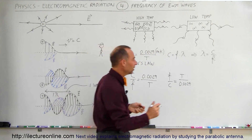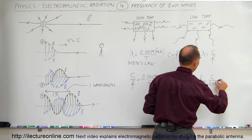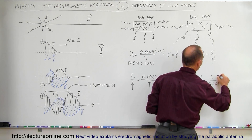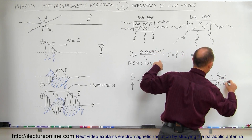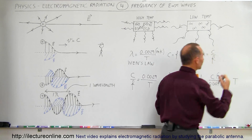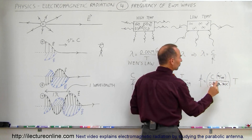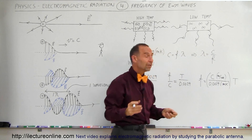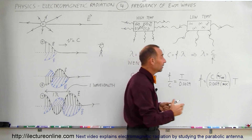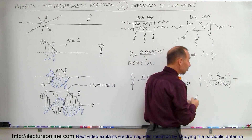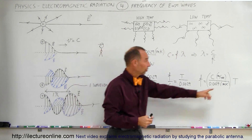Finally, solving for frequency, we get that the frequency is equal to the speed of light — in meters per second — divided by 0.0029 meter·Kelvin, times the temperature in Kelvin. The Kelvin units cancel, so the frequency is equal to some constant times the temperature. This means if the temperature of the object doubles, the frequency of the radiation coming from the object will double as well. If the temperature is halved, the frequency will be halved. The frequency of the radiation is simply proportional to the temperature of the object.